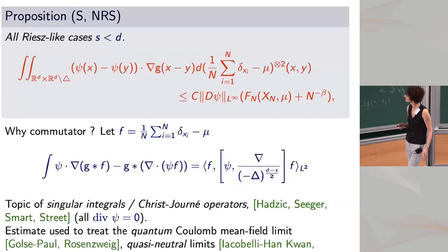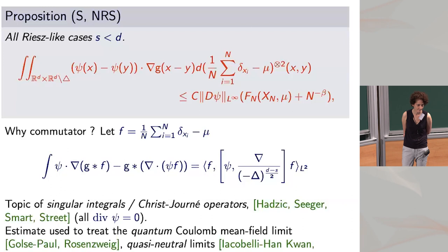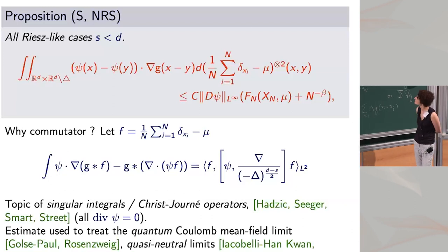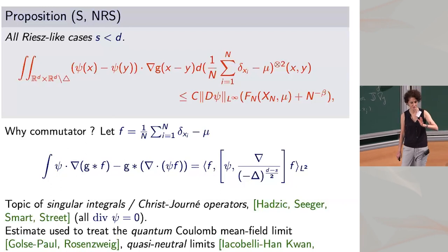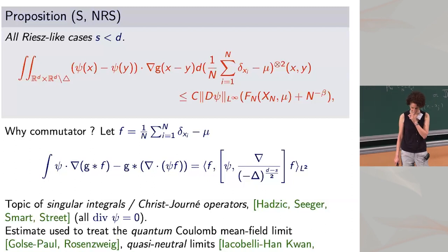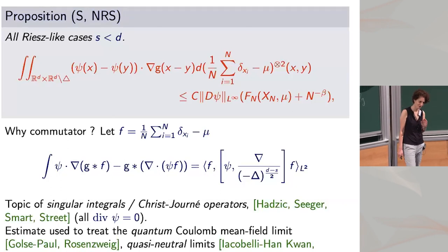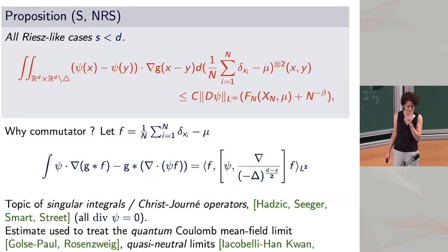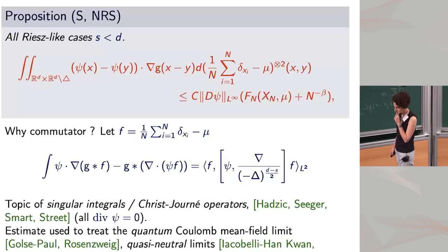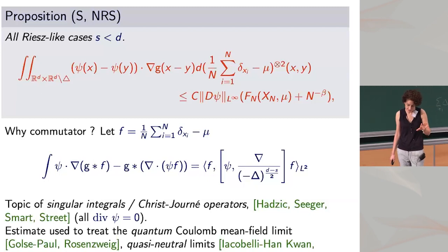Let me show you the idea of the proof in the Coulomb case, which is special because the Coulomb interaction is the fundamental solution to the Laplacian. We use an electric rewriting of the energy. Given the distribution f (difference between empirical and reference measure), take the convolution of f with G — that's the electric potential, call it H_f. In the Coulomb case it solves a Poisson equation: minus Laplacian H_f is proportional to f. Then the interaction rewrites as H_f times f; replacing f by the Laplacian from the Poisson equation and integrating by parts gives the integral of |grad H_f|^2 — transforming the double integral into a single integral expressed via the electric potential.